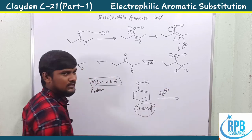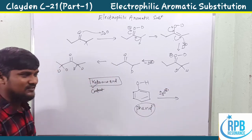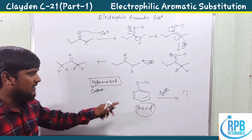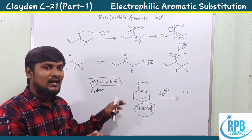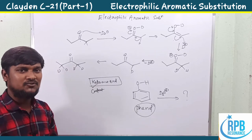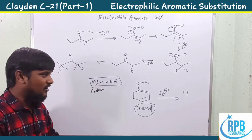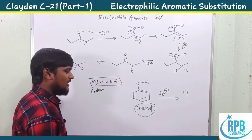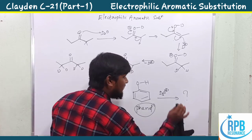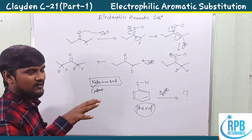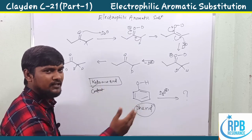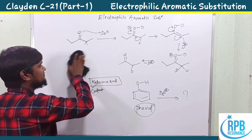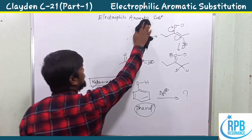Now, what happens when phenol is treated with D₃O⁺, that is deuterium water or heavy water? We don't know whether it produces mono-deuterated phenol, 2,4,6-trideuterated phenol, or all protons replaced. The author provides complete information with the help of NMR spectroscopy.